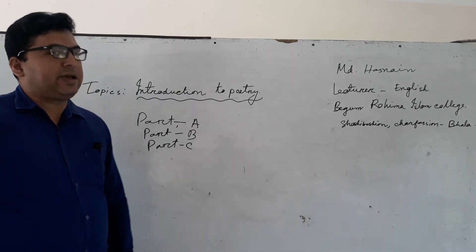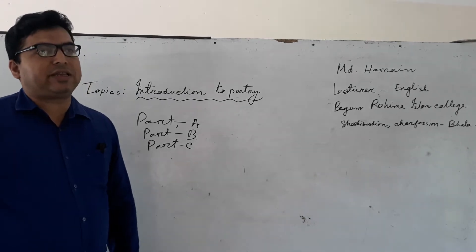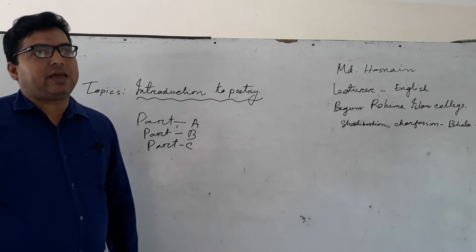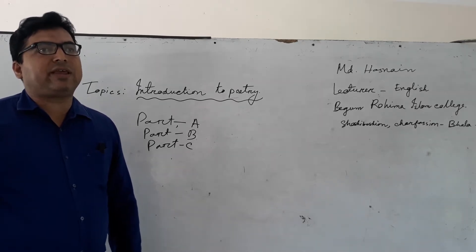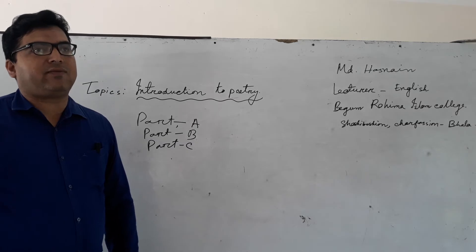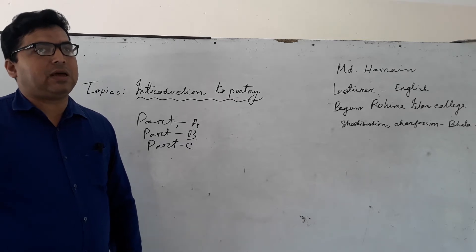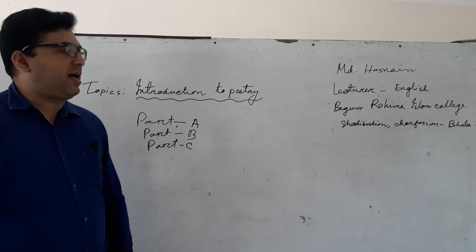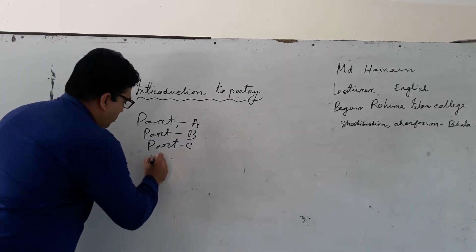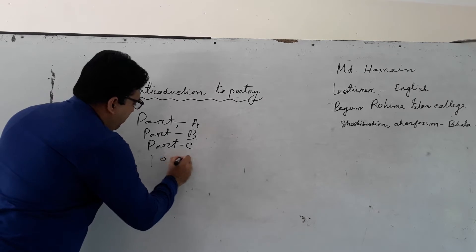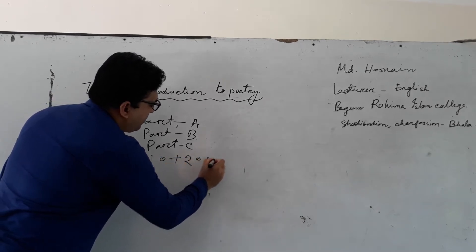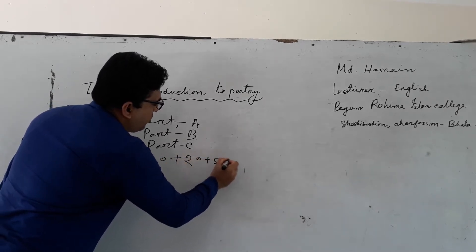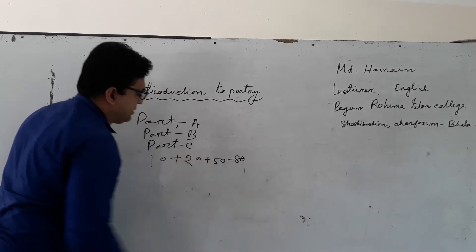Part C is the broad question. 8 questions will be set. Every student will answer 5 questions. Every question is 10 marks. Total 50 marks. So 10 plus 20 plus 50 equals total 80 marks.